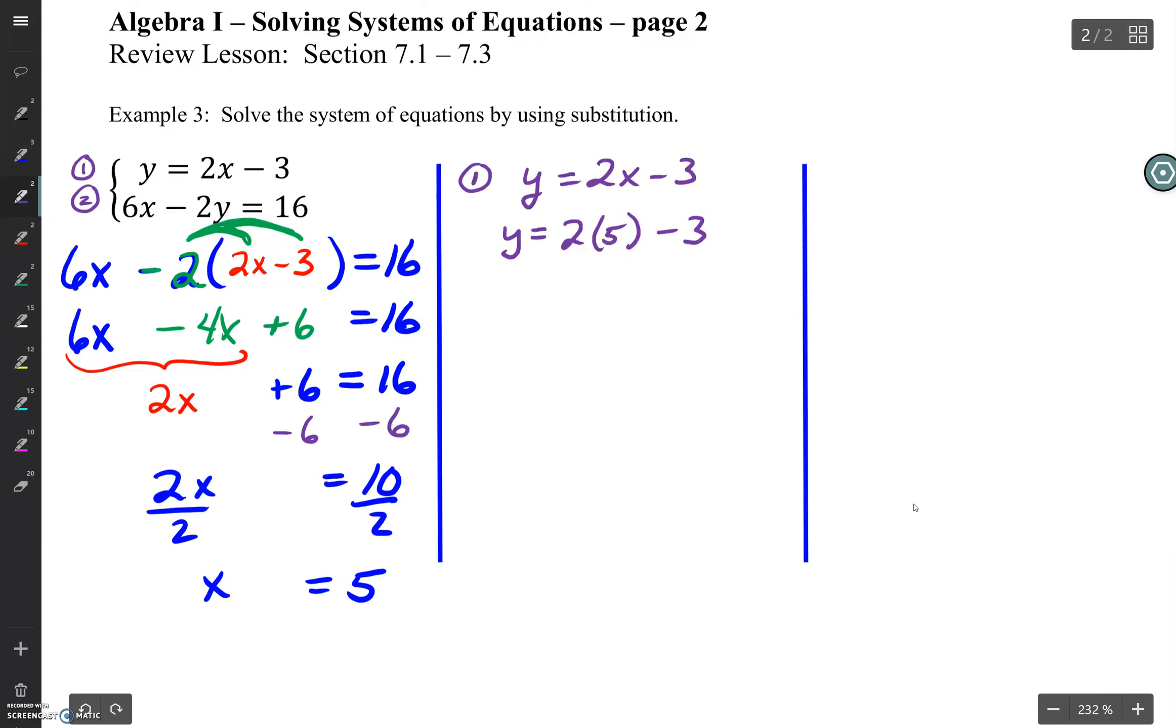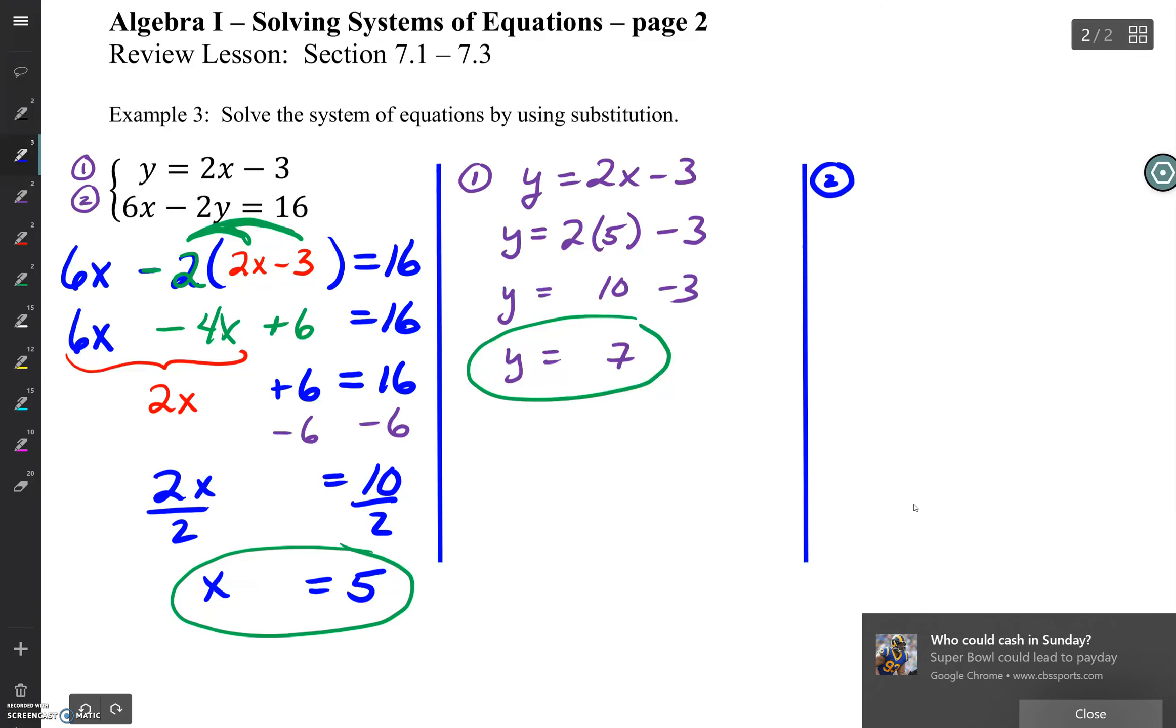We've got to say y equals 2 times 5 minus 3. That's 2 times 5 is 10, and 10 minus 3 is 7. So now we have the second value of our problem, x equals 5 and y equals 7. But we've talked a lot in class about making sure we check it. So in this third column, let's check it.